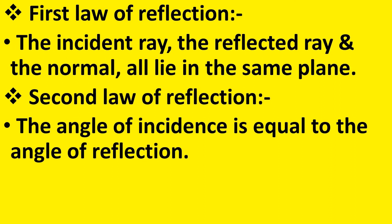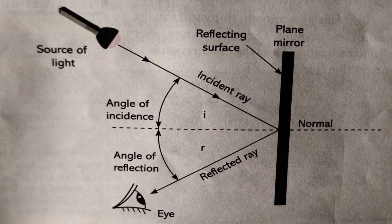Now let us see the statement of the laws of reflection. First law: the incident ray, the reflected ray, and the normal all lie in the same plane. Second law of reflection: the angle of incidence is equal to the angle of reflection. In the diagram, I represents the angle of incidence and R represents the angle of reflection. According to the second law of reflection, I is equal to R — that is, angle of incidence equals angle of reflection.